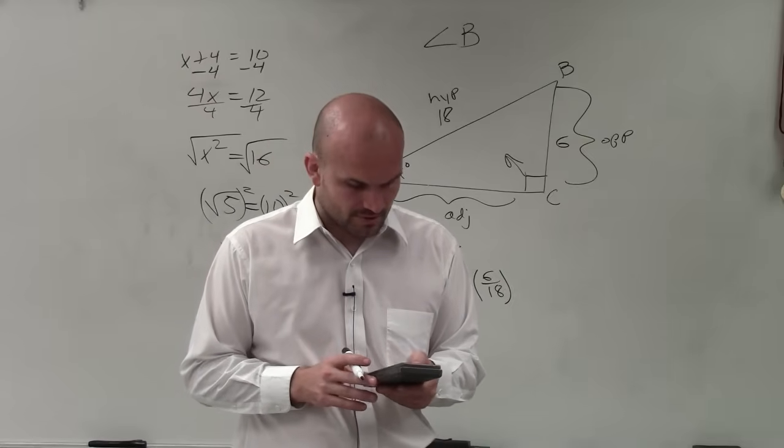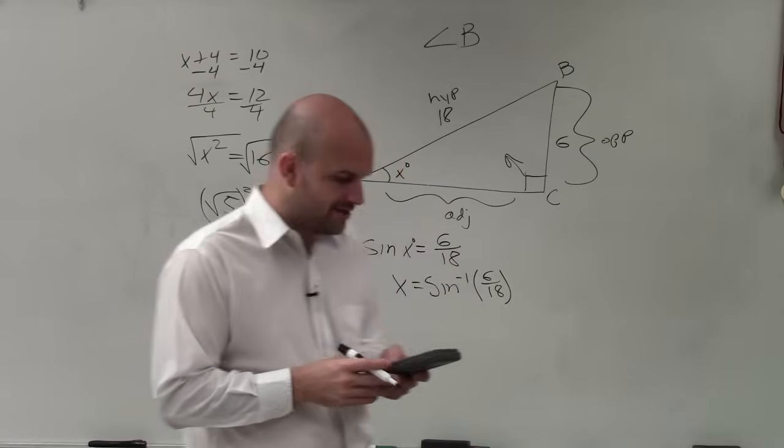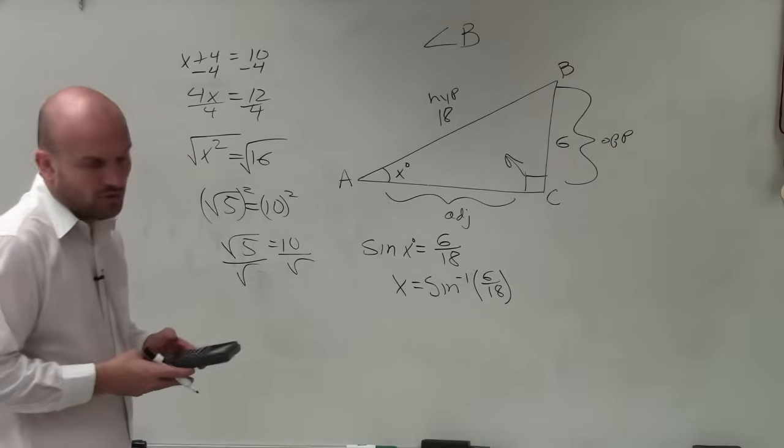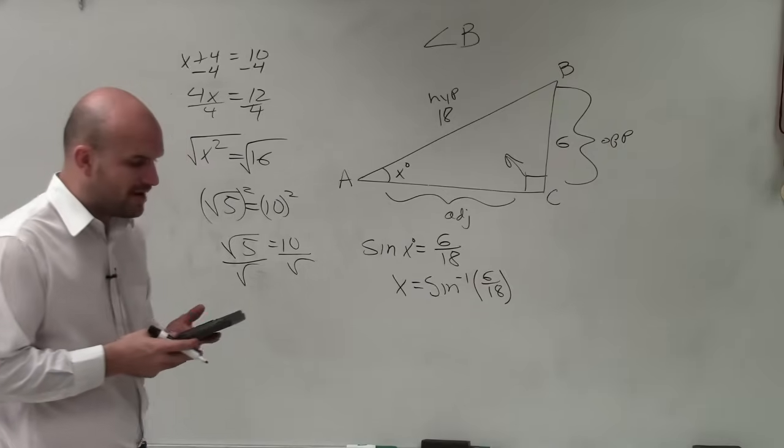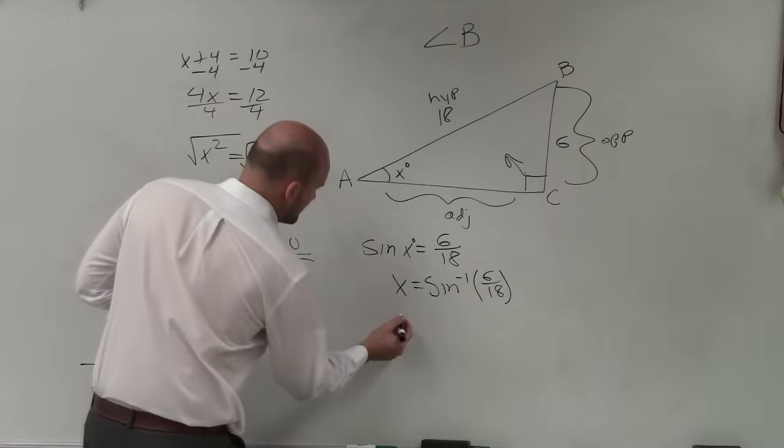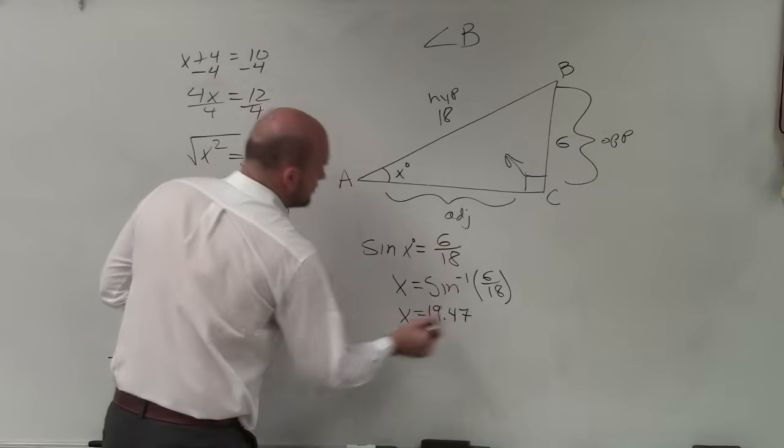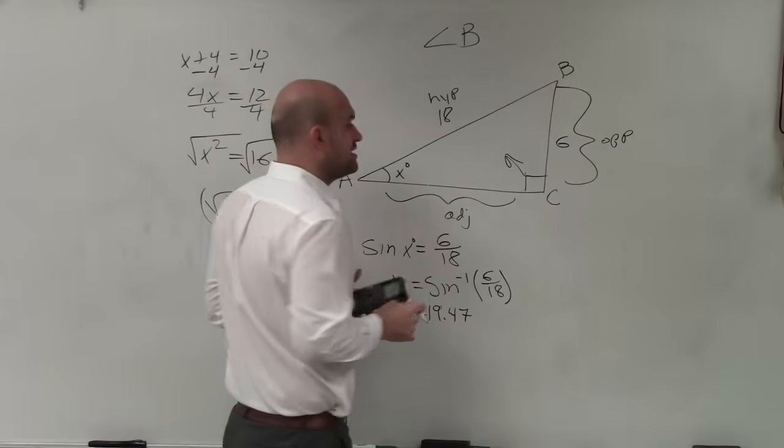and then you can just put in parentheses, 6 divided by 18, or reduce that to 1/3. And what I get is 19.47. Make sure you're in degree mode.